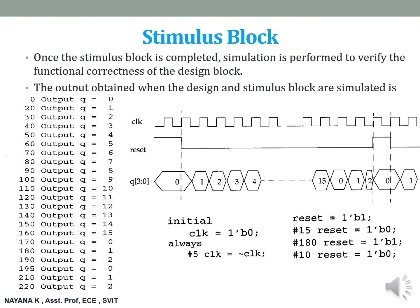Once the stimulus block is completed, the simulation is performed to verify functional correctness. Once the stimulus code is written and run, we can observe the set of outputs — what happens at every timing instant and what is the counting value sequence. We can observe the counter count till 15 and then it resets — a rollover which happens automatically — and again it counts from zero, one, two. But after two, again at the 195 time instant, we made reset high, so the counter resets back to zero and starts counting again. In this video lecture we have understood about components of a simulation, what is a design block and what is a stimulus block. Thank you.